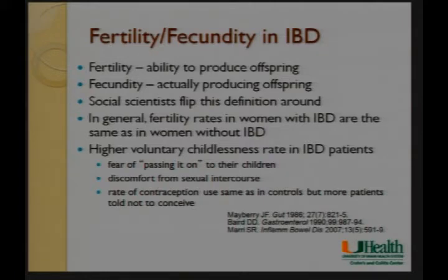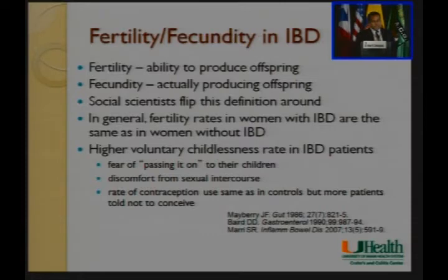When you talk about fertility — the ability to have offspring — the fertility rates in women with inflammatory bowel disease are about the same as women without IBD, so they're not really infertile to any significant degree. However, they have lower fecundity, or actual production of offspring, in large part because there's a higher voluntary childlessness rate. This comes from several social stigmas, some accurate, some inaccurate.